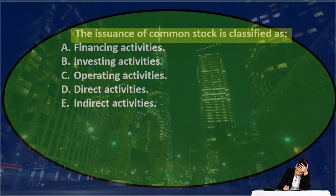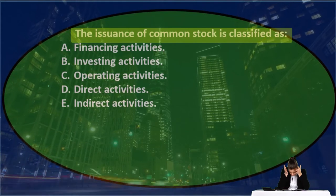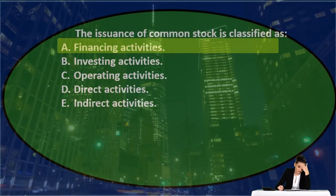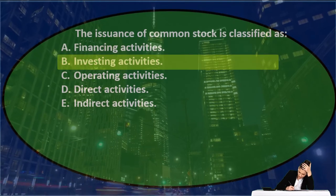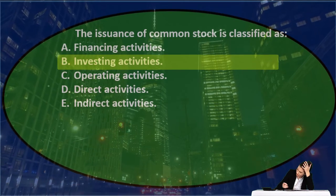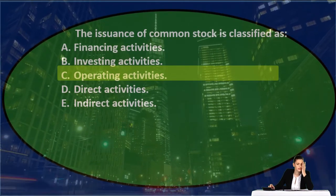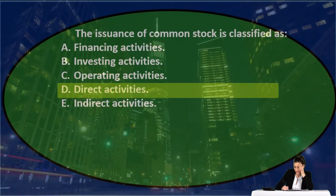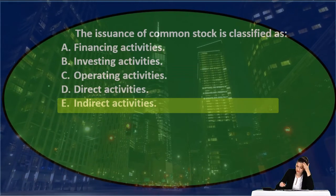Next question: the issuance of common stock is classified as A, financing activity; B, investing activity; C, operating activity; D, direct activities; or E, indirect activities.